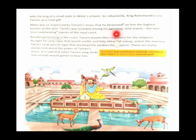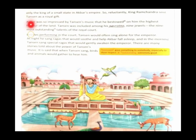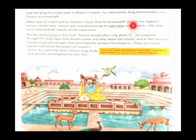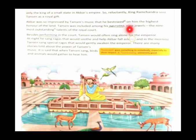Akbar was so impressed by Tansen's music that he bestowed on him the highest honor of the land. Tansen was included among his Navratna — the nine jewels, the nine most outstanding talents of the royal court. Besides performing in the court, Tansen would often sing alone for the Emperor.